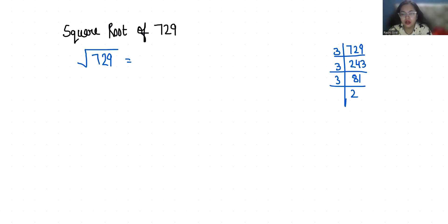Divide 27 by 3, we get 9. Then 9 by 3 gives 3, and 3 by 3 gives 1. So we reach 1.